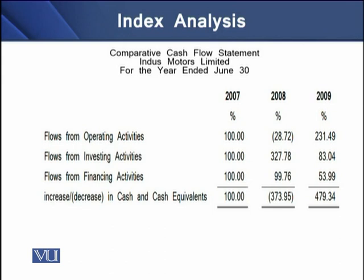In terms of overall change in cash and cash equivalents, the 2008 value is negative 373% of 2007, but for 2009 there has been a good change — at 479% of the 2007 value. So in 2009, the net change in cash and cash equivalents is 479% of the 2007 figure.